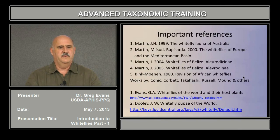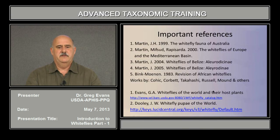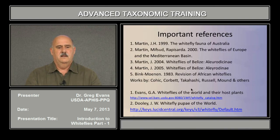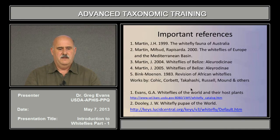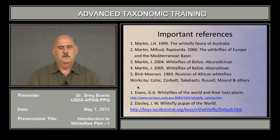These are some important references for white flies: White Flies of Australia, White Flies of Europe and the Mediterranean Basin. For the neotropical area there are White Flies of Belize covering both Aleyrodinae and Aleurodicinae, which covers the Aleurodicinae genera very well. There's also a revision of the African white flies by Bink-Moens, and works by Quaintance, Corbett, Takahashi, Russell, Mound, and others. There's my white fly website that has a catalog of the white flies of the world and their host plants, and John Dooley's white fly pupae of the world Lucid key.